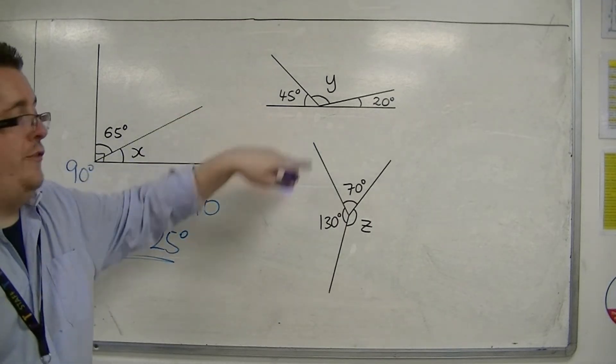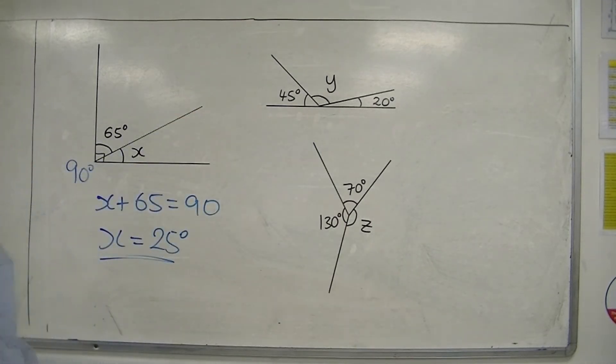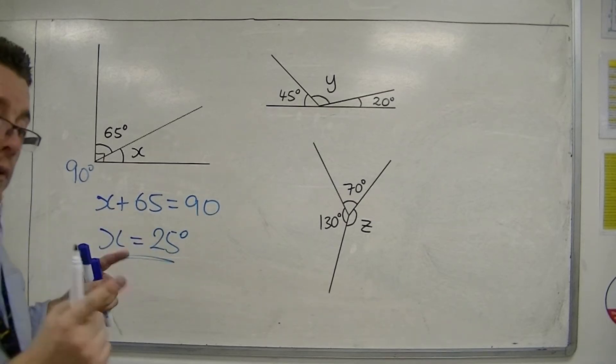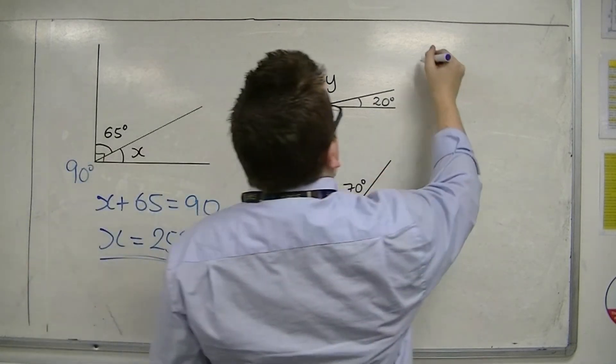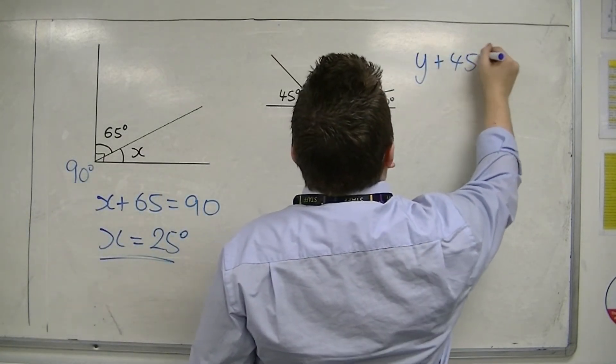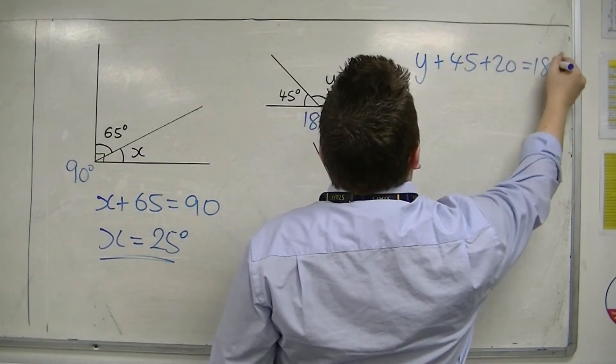Now, for this second problem, we know that angles on a straight line must add up to 180 degrees. So the three angles must add up to 180 degrees.